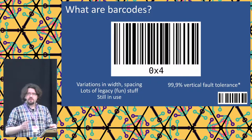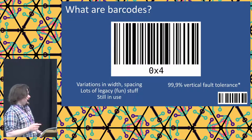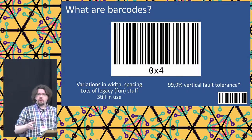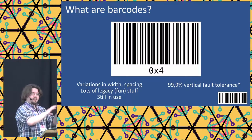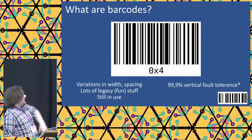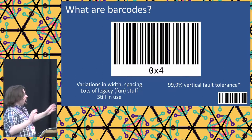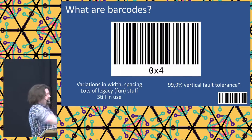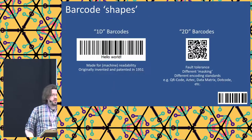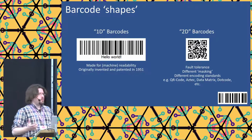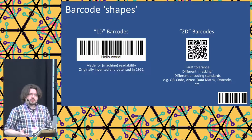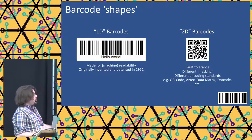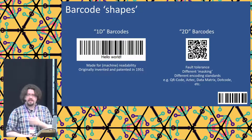British Railways found a way to read barcodes on the sides of containers while they were going about 100 miles per hour — actually scanning trains in transit. Barcodes have about 99.9% fault tolerance, but only vertically, so they're always cut through the middle. We have two kinds of barcode shapes: one-dimensional barcodes — the regular stripe ones — and 2D barcodes, which are the newer ones like QR codes, Aztec, data matrix, and dot code.